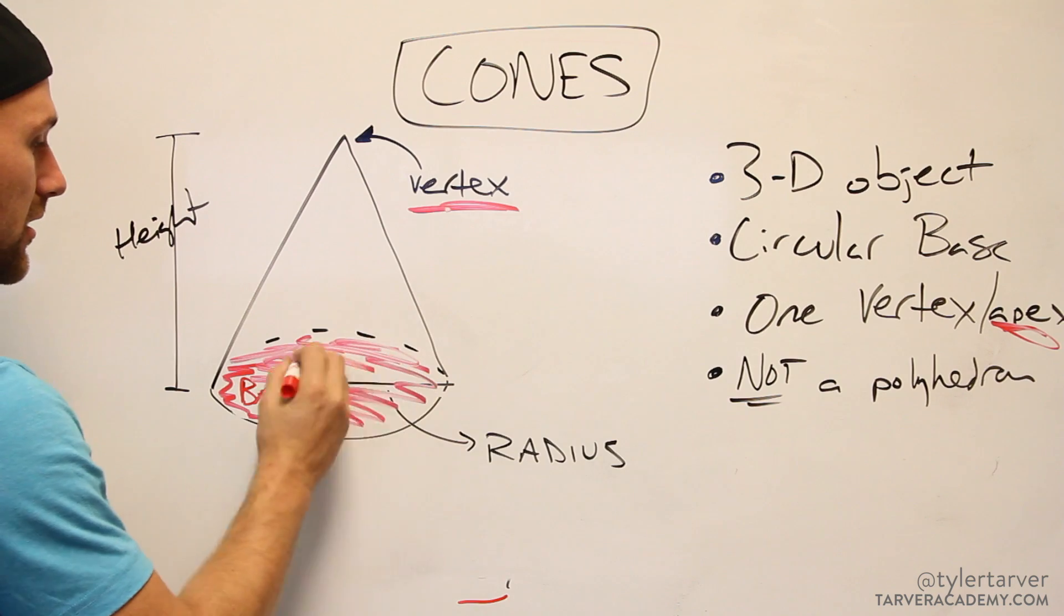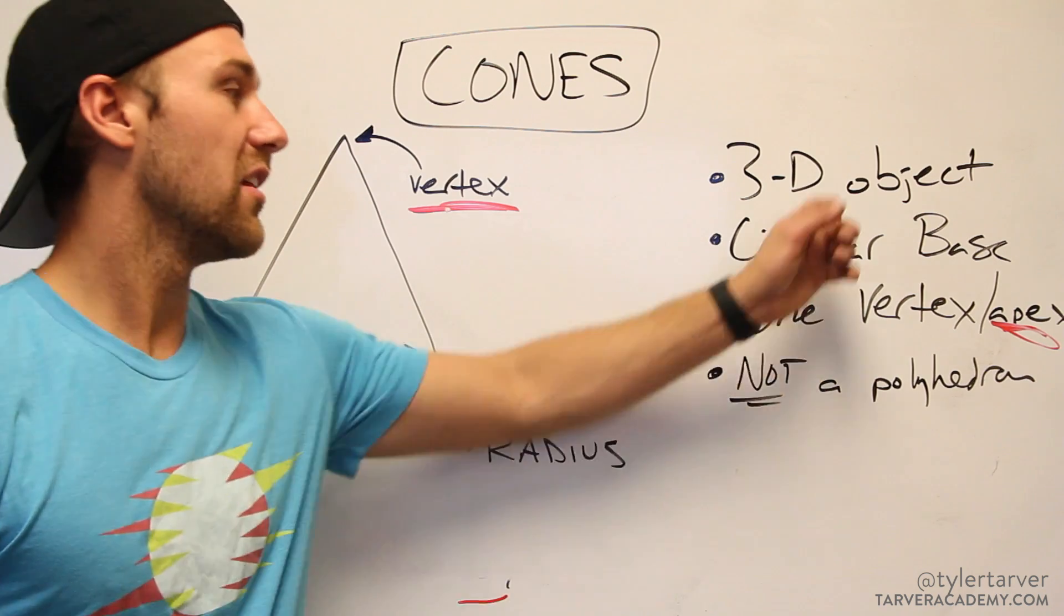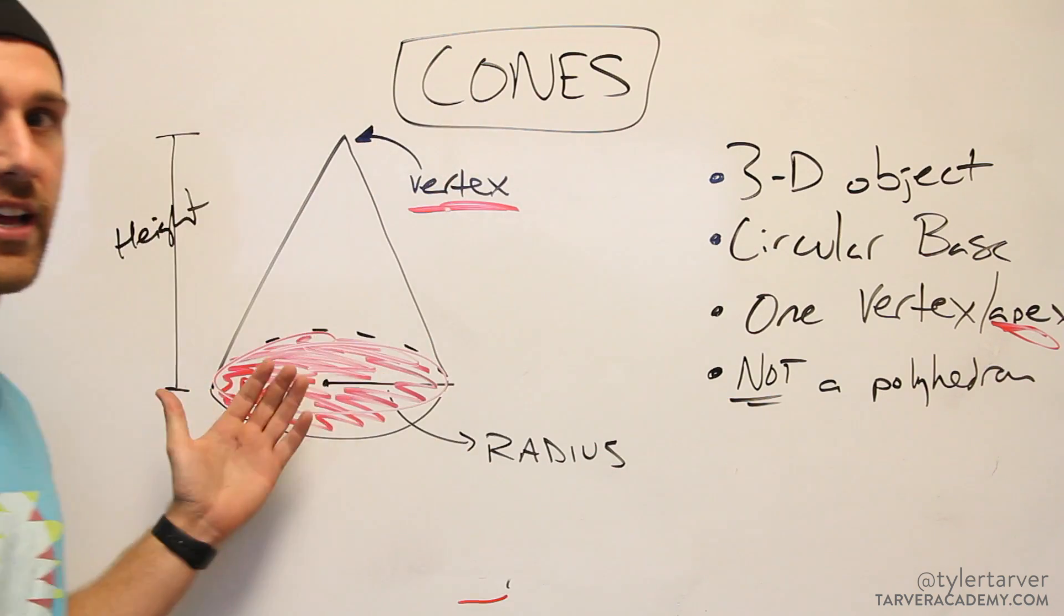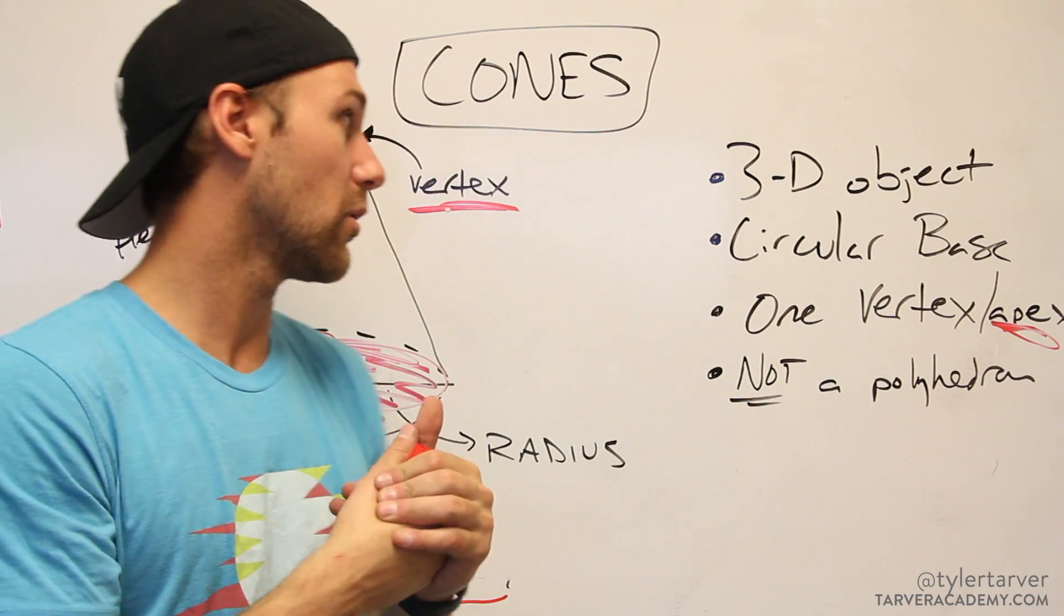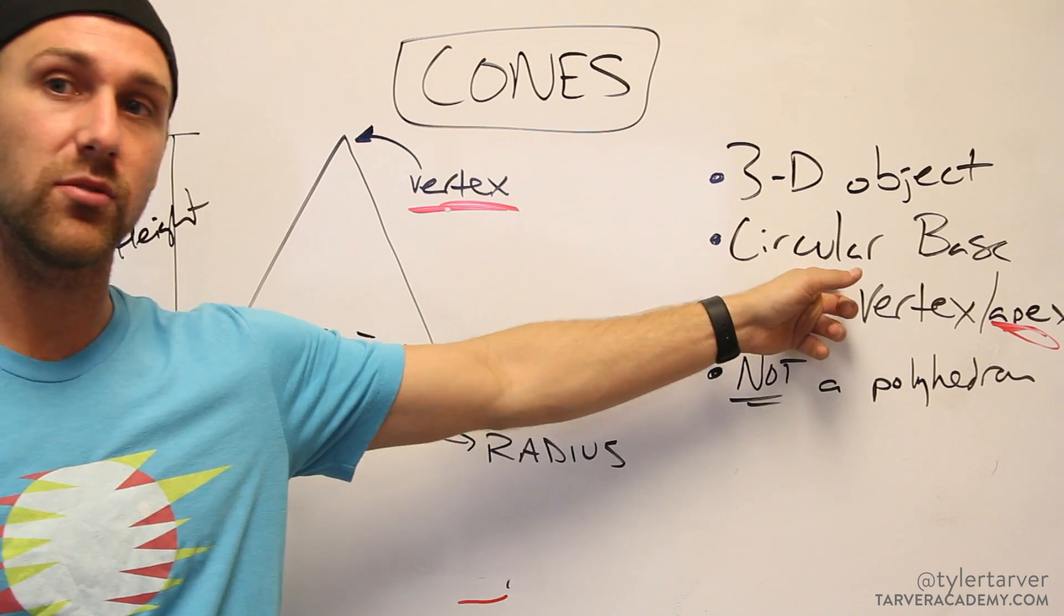Now, other things: it is a three-dimensional object so you can hold it. It's not a flat thing that you're looking at. It looks flat here because it's written on a two-dimensional surface but it is not flat. It is a 3D shape.